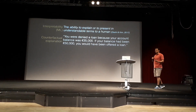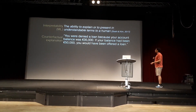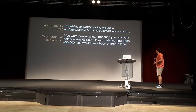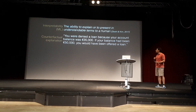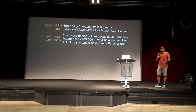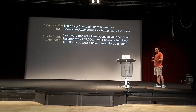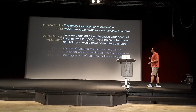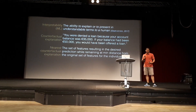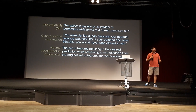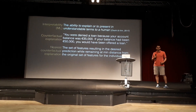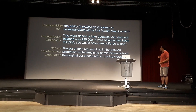They go something like this: you were denied a loan because your account balance was 35,000 euros. If your balance had been 50,000 euros, you would have been offered a loan. Specifically in this scenario, the nearest counterfactual explanation is important because it specifies the minimum effort that the individual must endure in order to get the desired outcome.